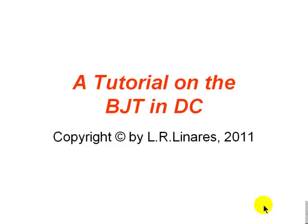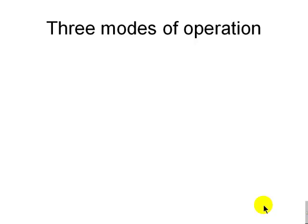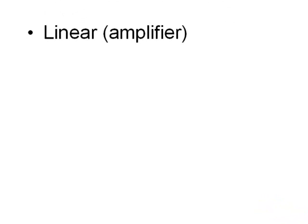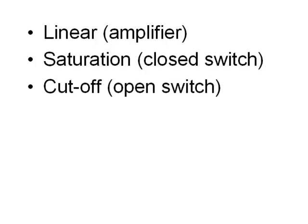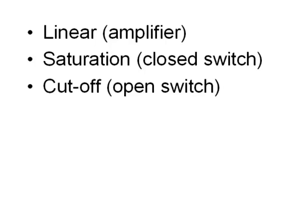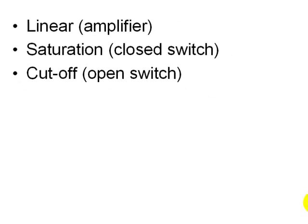A tutorial on the BJT in DC. The BJT can function in one of three modes of operation. In linear mode, it works as a current amplifier. In saturation mode, it resembles a closed switch. In cutoff mode, it acts as an open switch.